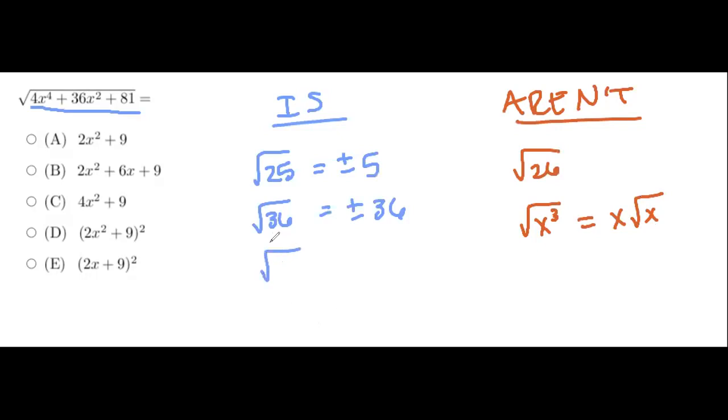And let's just give one variable example for something that is, something like x to the 4th. We would get x squared. So hopefully that kind of makes sense as to what a perfect square is.